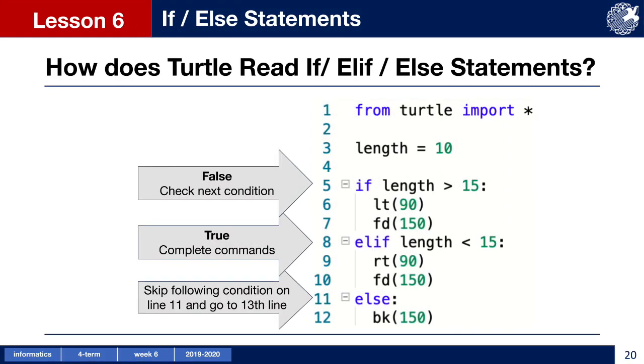In this case, our length value is set to 10. The turtle checks the first condition, length is more than 15 and finds that it is false. The turtle then moves to the next condition, the length is less than 15, which is true, so it completes the commands beneath it. Once these commands are completed, it moves to the code that follows the if-else statement.